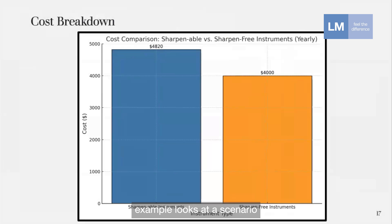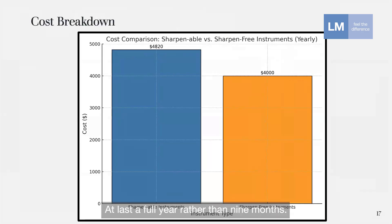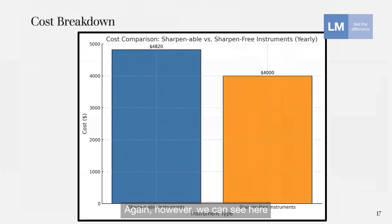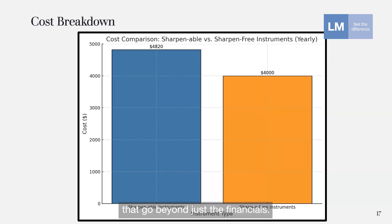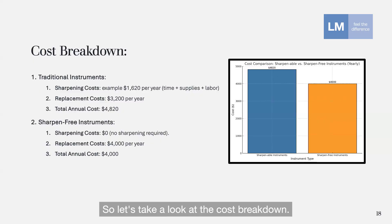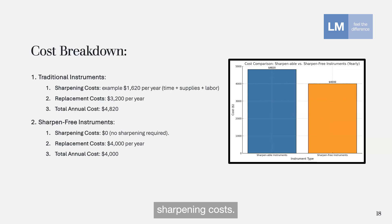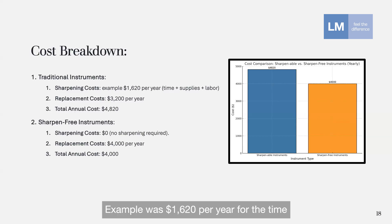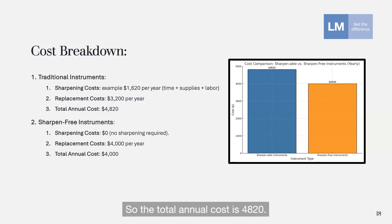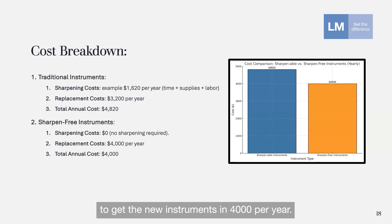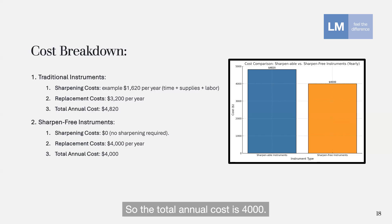This next example looks at a scenario where instruments are sharpened every two weeks rather than weekly, compared to sharpen-free instruments that last a full year rather than nine months. At first glance, sharpening less frequently may seem like a cost-saving strategy, but it leads to bigger issues beyond just the financials. For traditional instruments: sharpening costs of $1,620 per year for time, supplies, and labor, plus replacement costs of $3,200 per year, totaling $4,820 annually. For sharpen-free instruments: zero sharpening costs and $4,000 per year for replacements, totaling $4,000 annually.